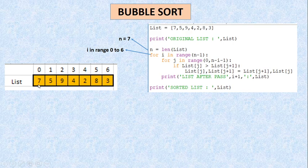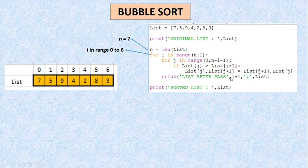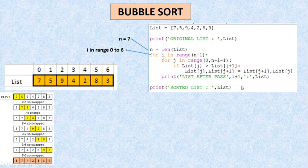इसको हम swapping बोलते हैं — swapping मतलब जब मैंने 7 और 5 को compare किया and according to ascending order, 7 पीछे होना चाहिए, 5 आगे होना चाहिए, तो मैं इन दोनों elements की location को change कर रही हूँ, इसको swapping बोलते हैं। तो यहाँ पर मैं basically swapping ही कर रही हूँ। और जब मेरा inner loop पूरा खत्म हो जाता है, तो उसको हम बोलते हैं pass — जो मेरा एक complete execution होता है inner loop का। तो list after pass जो भी होगी, वो मैं print करवाती जा रही हूँ, और finally sorted list को print करवा रही हूँ।